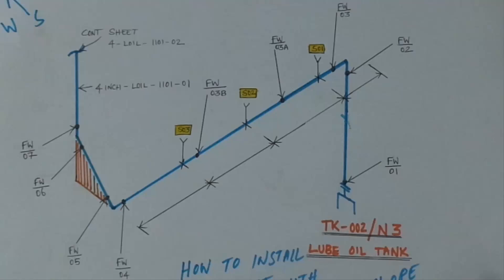Some lines like lube oil line, transformer drain line, drainage pipeline, and sewerage systems—these types of lines are coming under slope.